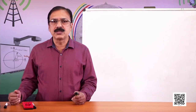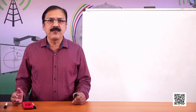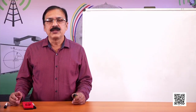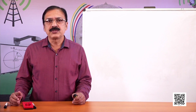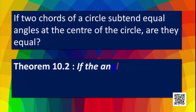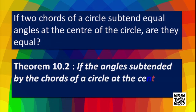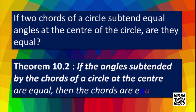Now if two chords of a circle subtend equal angles at the center of the circle, are they equal? This question verifies the converse of the last theorem. The converse states: if the angles subtended by the chords of a circle at the center are equal, then the chords are also equal.